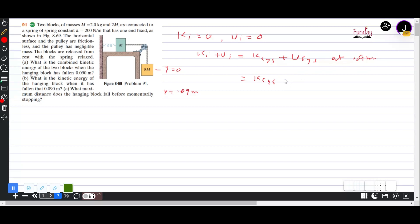What is the loss in potential energy? That is 2M times g times 0.09. What is the gain in spring energy? That is half into 200, k is 200 Newton per meter, and x is going to be the same. The stretch in the spring is going to be 0.09 whole square.